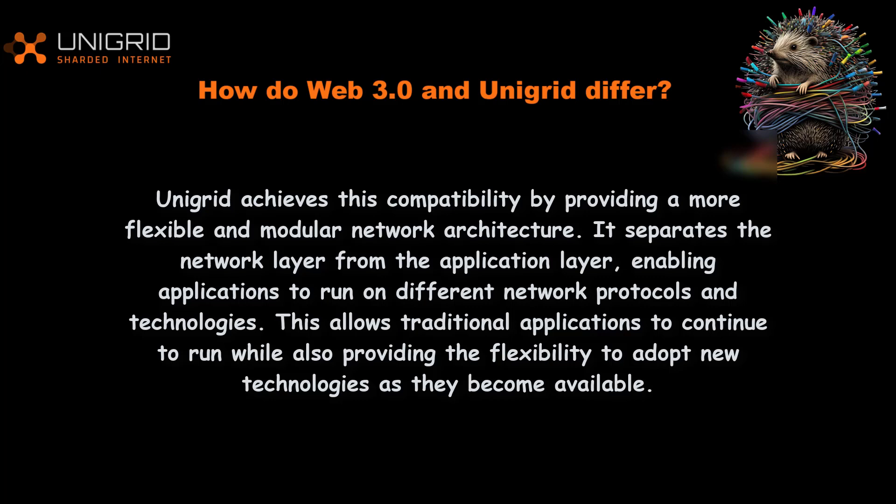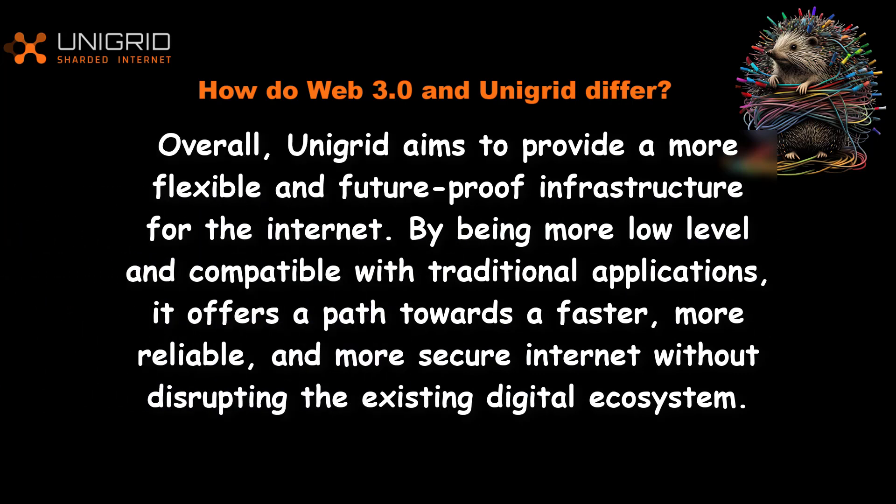Unigrid achieves this compatibility by providing a more flexible and modular network architecture. It separates the network layer from the application layer, enabling applications to run on different network protocols and technologies. This allows traditional applications to continue running while also providing the flexibility to adopt new technologies as they become available, offering a more flexible and future-proof infrastructure without disrupting the existing digital ecosystem.